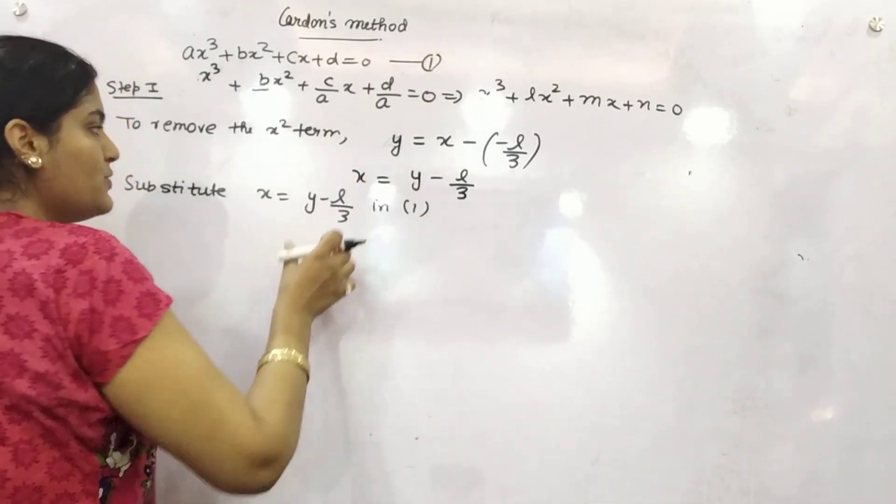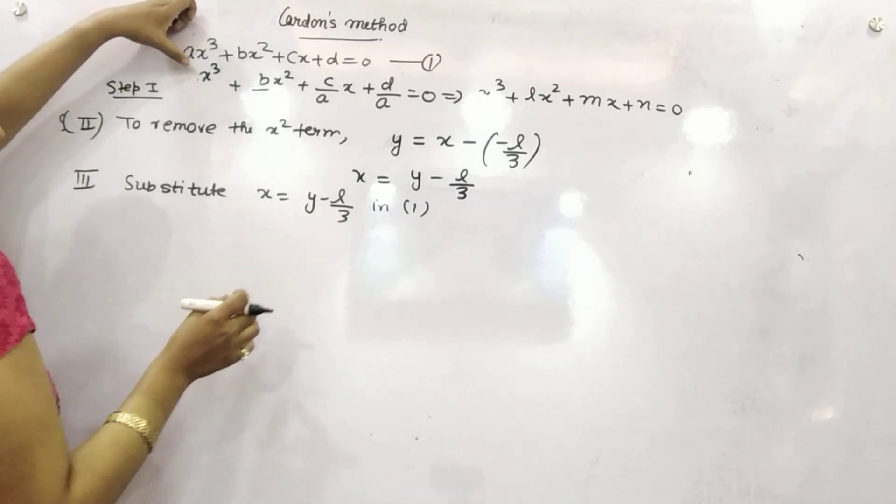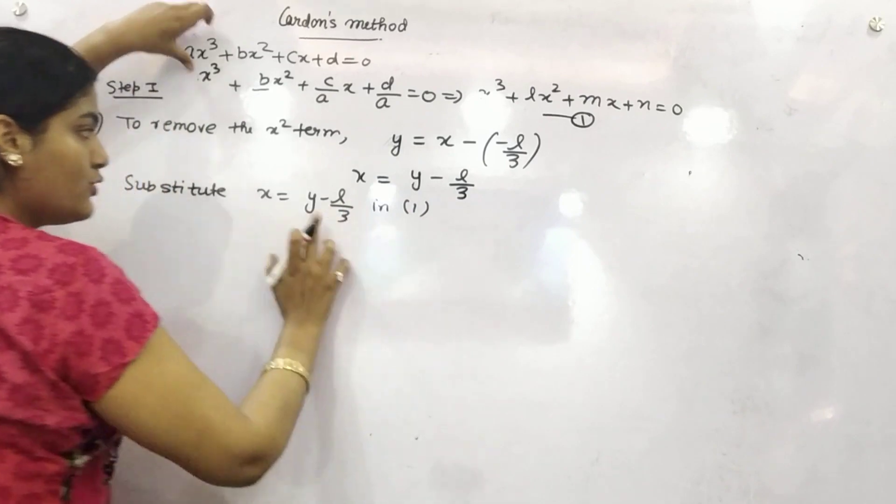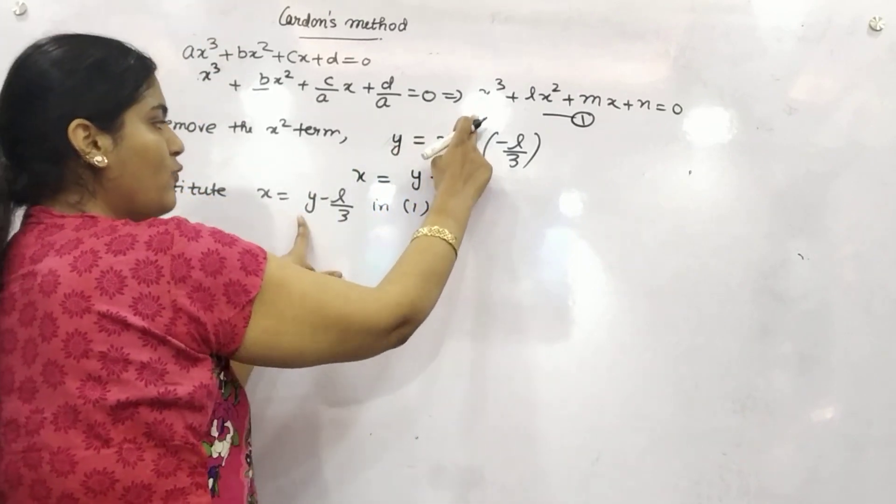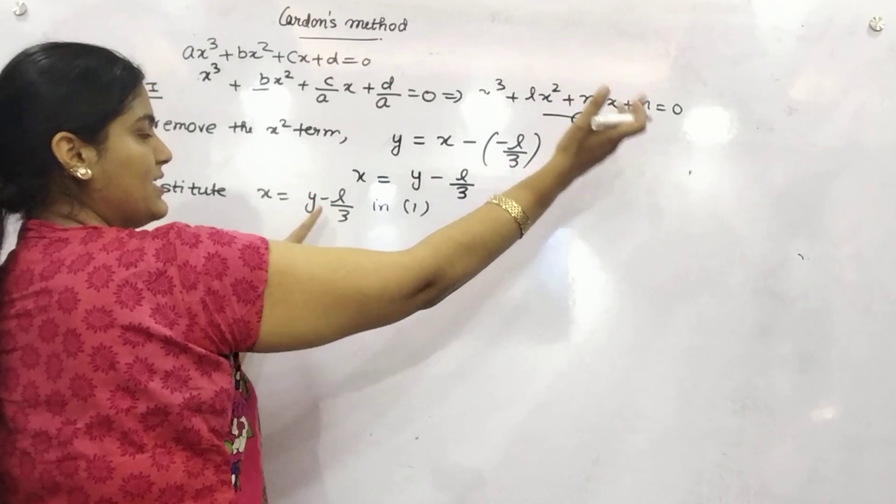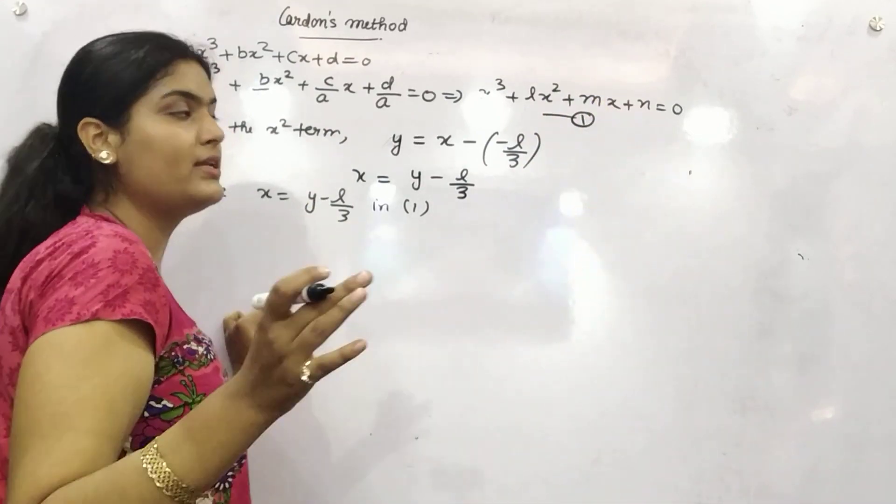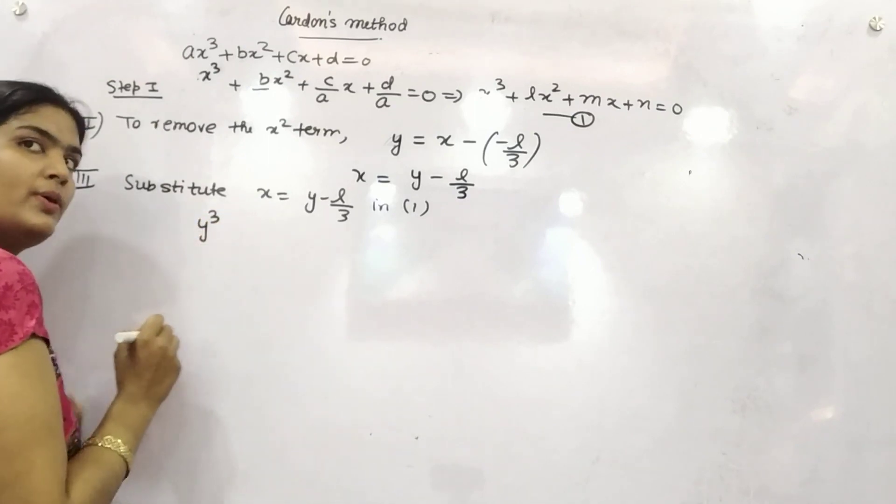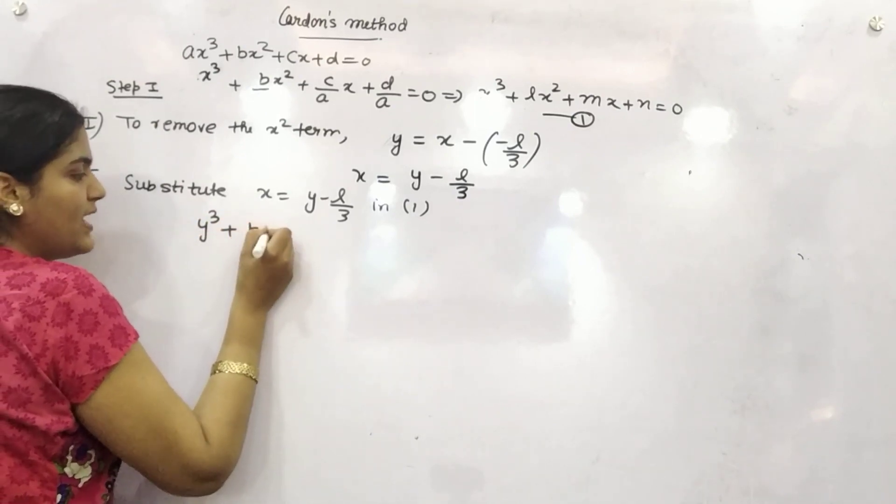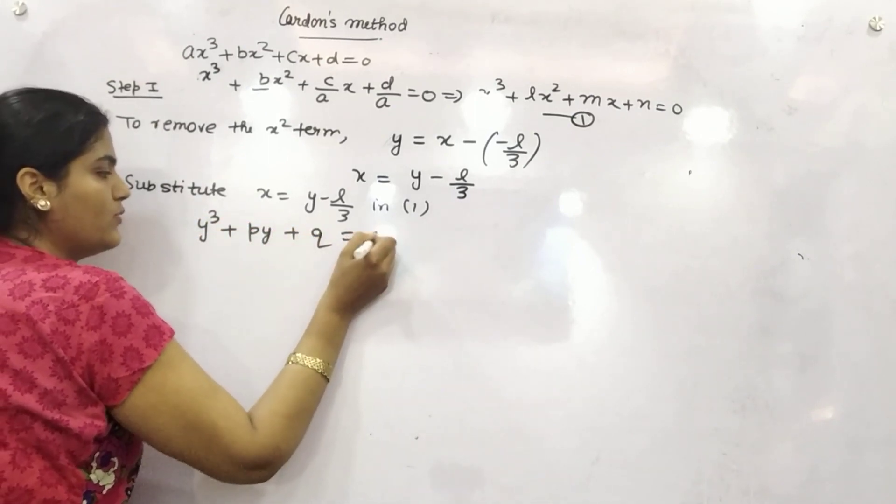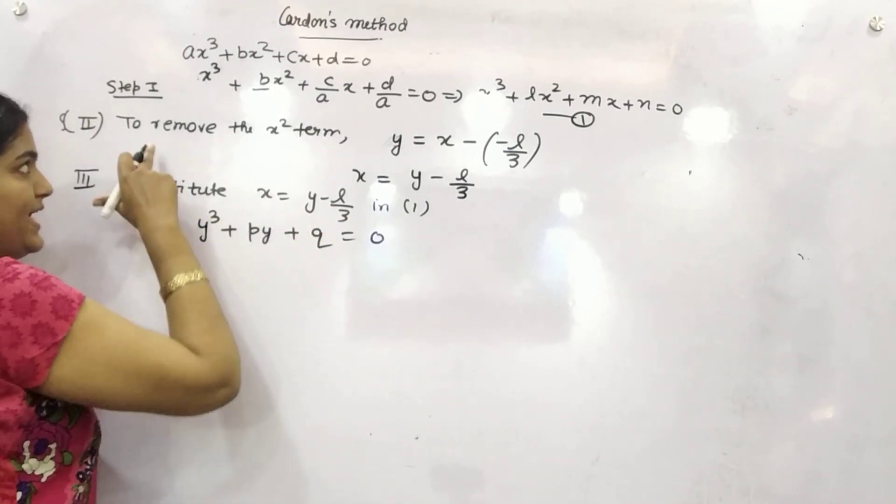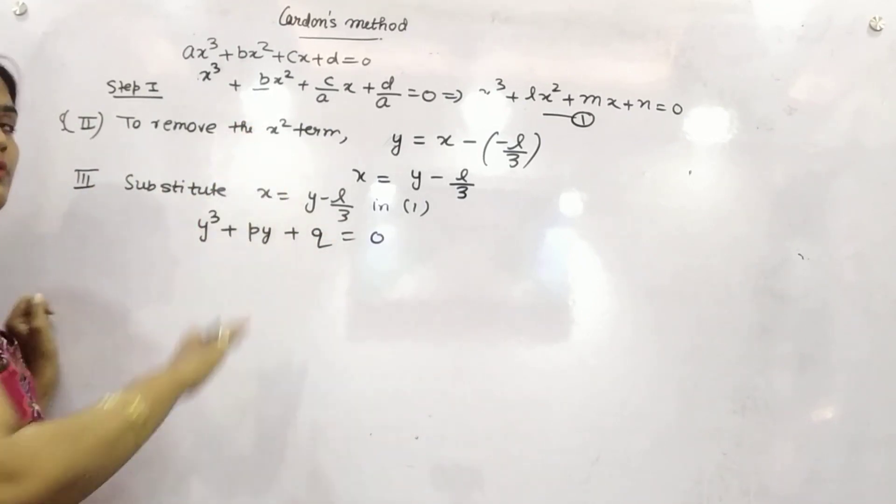Once you will substitute it, it will be like, this is your main equation. So once you will substitute it, it will be like y minus l by 3 cube, l into y minus l by 3 square and so on. So it will form something like y cube plus py plus q equals 0 in the form of this, which will not have x square, because you did this step to remove x square.